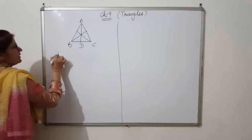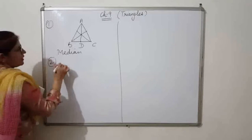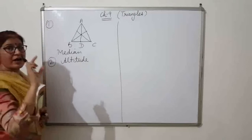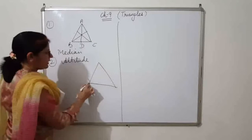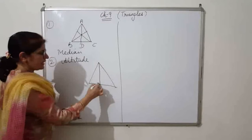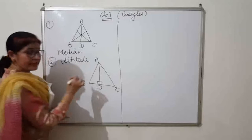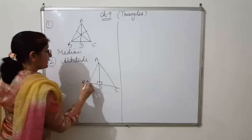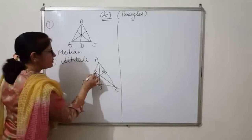Now secondly, about altitude, perpendicular, or the height of the triangle. In a triangle, the perpendicular drawn from any vertex to the opposite side is known as its altitude, perpendicular, or height. It makes a 90-degree angle, but here D is not a midpoint. In a triangle there are three altitudes, and all three pass through the same point, known as the ortho center.